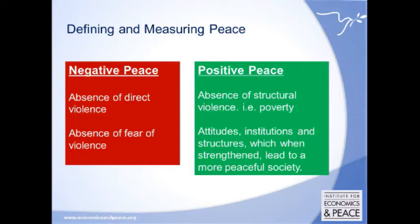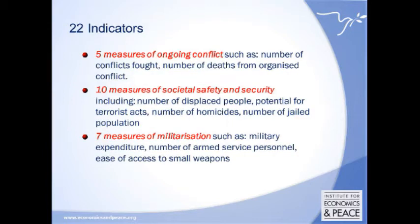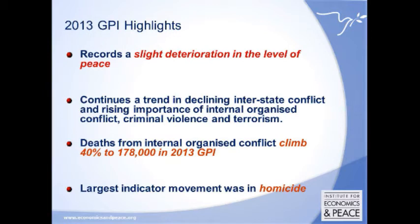Positive peace encompasses the attitudes, institutions, and structures that lead to mutual cooperation and help society move away from violence. Negative peace measures what we don't want; positive peace measures what we do want. The Global Peace Index involves three groups: the Institute for Economics and Peace, the Economist Intelligence Unit, and an independent expert panel providing peer review. We look at 22 indicators — both internal and external to a nation — ranging from measures of ongoing conflict, societal safety and security, and militarization.